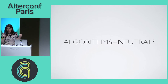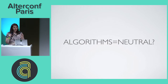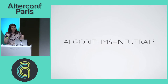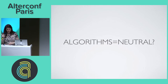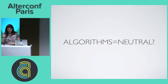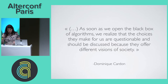For example, if you look at Sid Meier's Civilization, it teaches you a lot about what the game makers thought made empires rise and fall. And if you look at Facebook, you can understand how that team feels about what friendship is. Dominique Cardon, a sociologist, wrote in 2015 an article about the political role of algorithms, and he says: as soon as we open the black box of algorithms, we realize that the choices they make for us are questionable and should be discussed, because they offer a different vision of society.